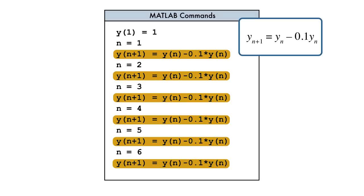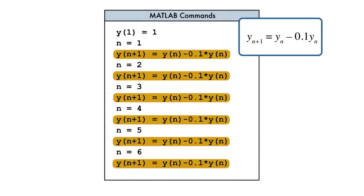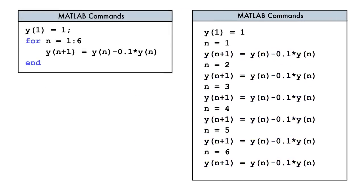The end result of these commands is a vector of seven elements. A more efficient way of achieving this result is to use a programming construct called a for loop. A for loop allows repeated execution of a particular set of commands for a fixed number of times.